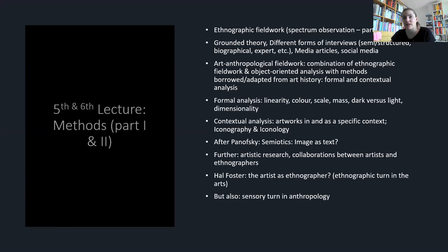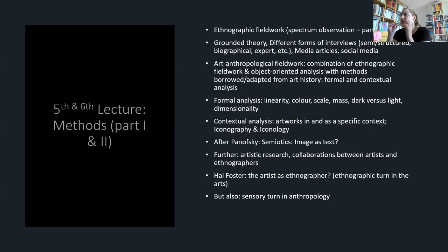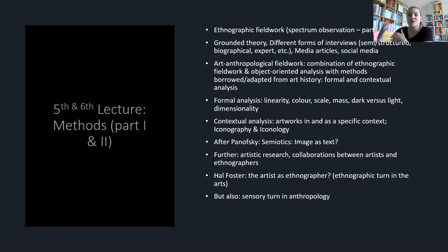Formal analysis concerns the formal properties of an artwork: linearity, color, scale, mass, dark versus light, dimensionality — how much room an artwork takes up in space. Contextual analysis means looking at artworks in a specific context — when and where and how was the artwork produced, what does it mean, what does the artist say, what does the curator say. But artworks can also be a context themselves — both artworks that are in a context and artworks that can function as a context. As part of contextual analysis, we talked about iconography and iconology — the three stages developed by Erwin Panofsky, including a pre-iconological phase and two more phases of analysis.